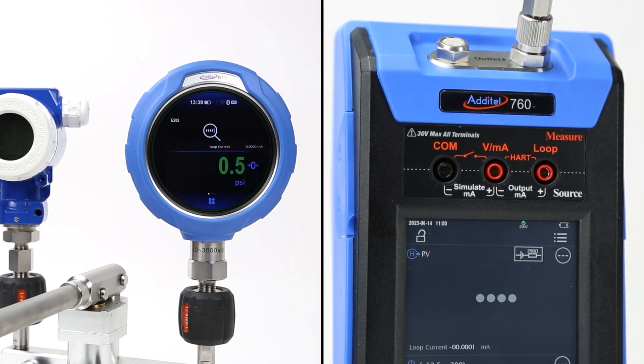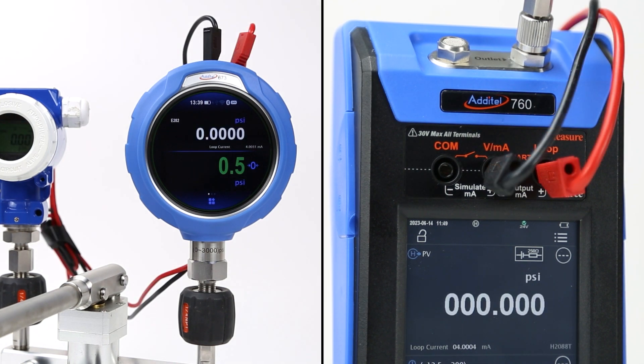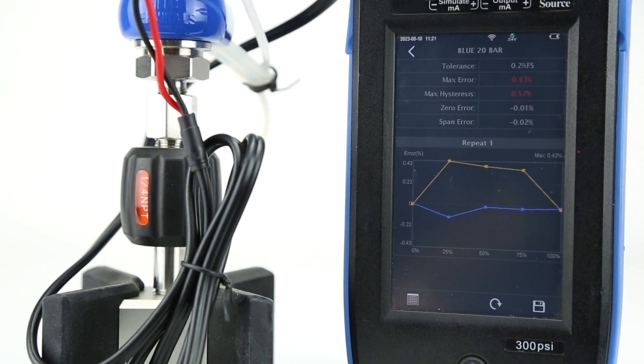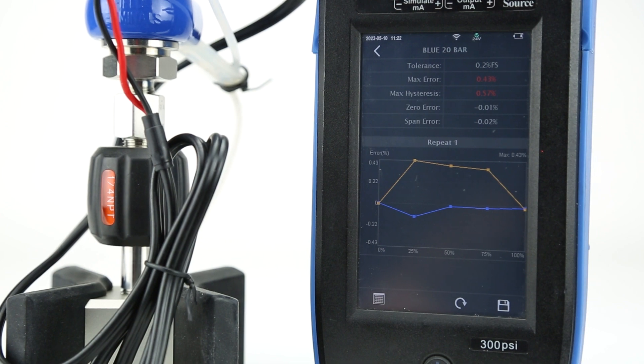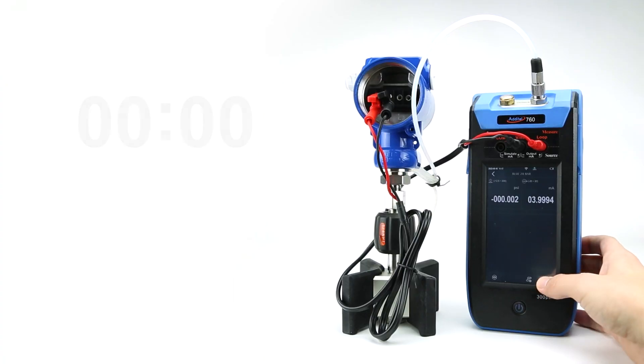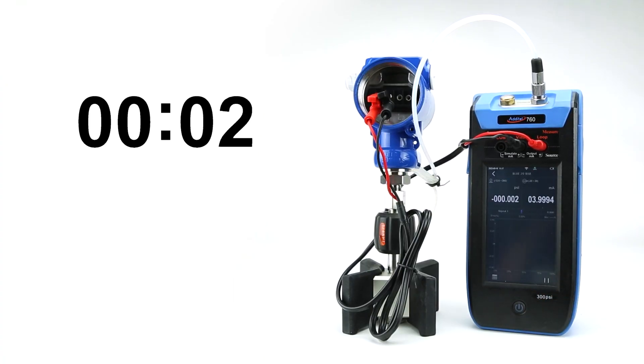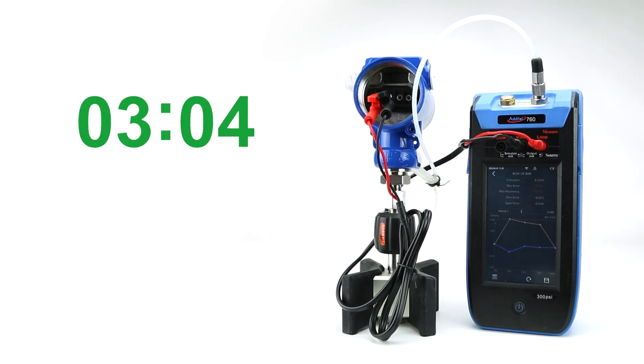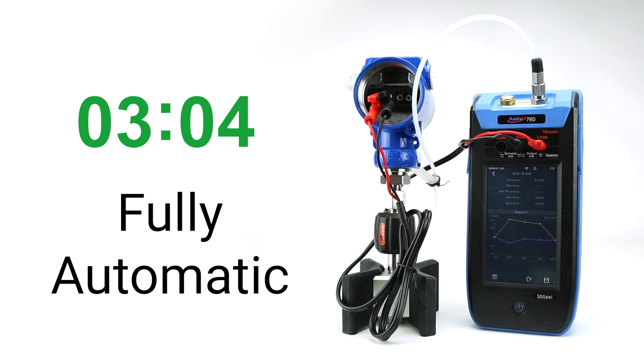In the case of a pressure transmitter, just connect the leads to the Adytel calibrators, both of which can provide 24-volt power and utilize HART communication. Since the 760 generates its own pressure, while reading both its own reference module and the pressure transmitter signal, it can complete the calibration completely automatically, with no input needed after starting the test.